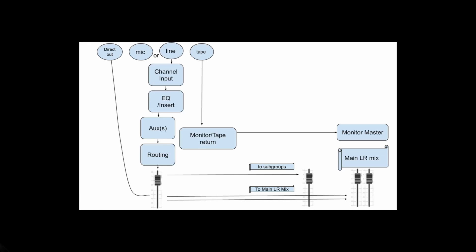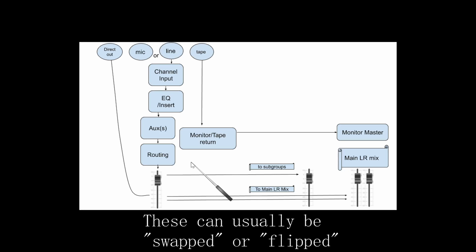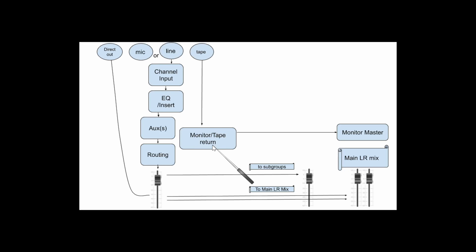The tape returns or monitor channels on a console exist so that you can create an independent mix from what's going to tape over here on the main channels. Different consoles do this different ways — like the Soundcraft Sapphire that I have. The smaller faders on top are the channel faders that are sending to tape, and then the big faders are used for the tape returns or monitor channels. It's made for mixing and for being able to hear what you want to hear while you're recording without affecting what's going on to the different tracks of tape or converters.